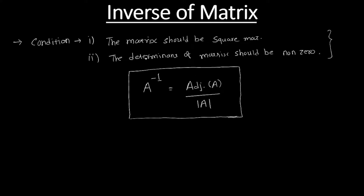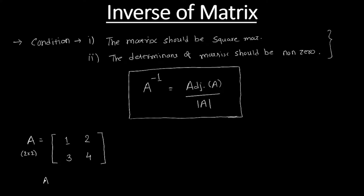Those who are not aware about the determinant of a matrix — I have already made a separate video regarding determinant of matrix, so I suggest you please refer that video first and then continue from this point. Now consider, for example, I am having a matrix A with the dimension 2×2, so the number of rows and number of columns are two, and the element values are 1, 2, 3, 4. I am asked to find out the inverse of A.